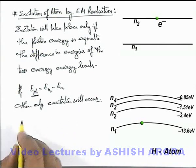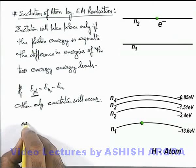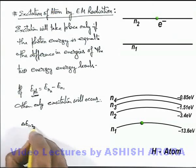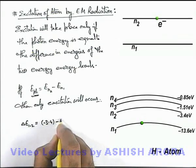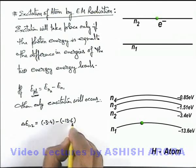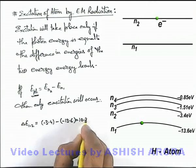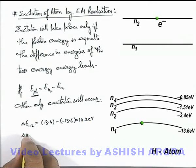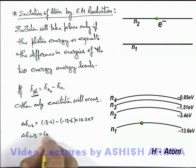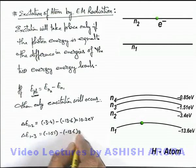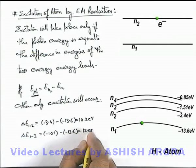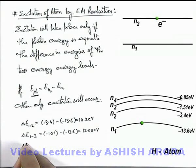And in this situation, if we just have a look on the energy difference, delta E of 1 and 2, if we see, it'll be the difference of minus 3.4 and minus 13.6. You can see this is 10.2 electron volts. And if we calculate the difference in energies of 1 and 3, it is minus 1.51 minus minus 13.6. This will be 12.09 electron volts.